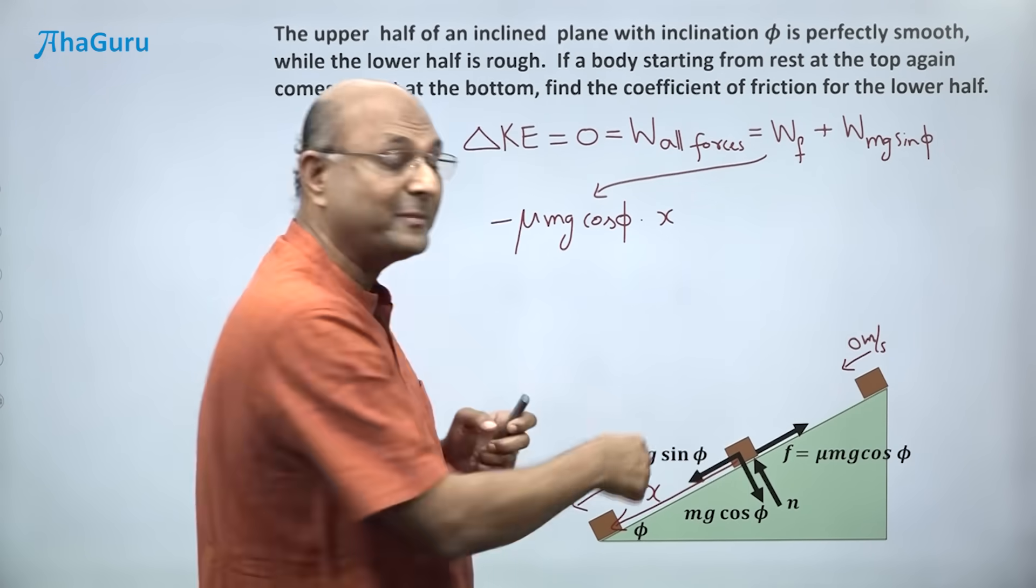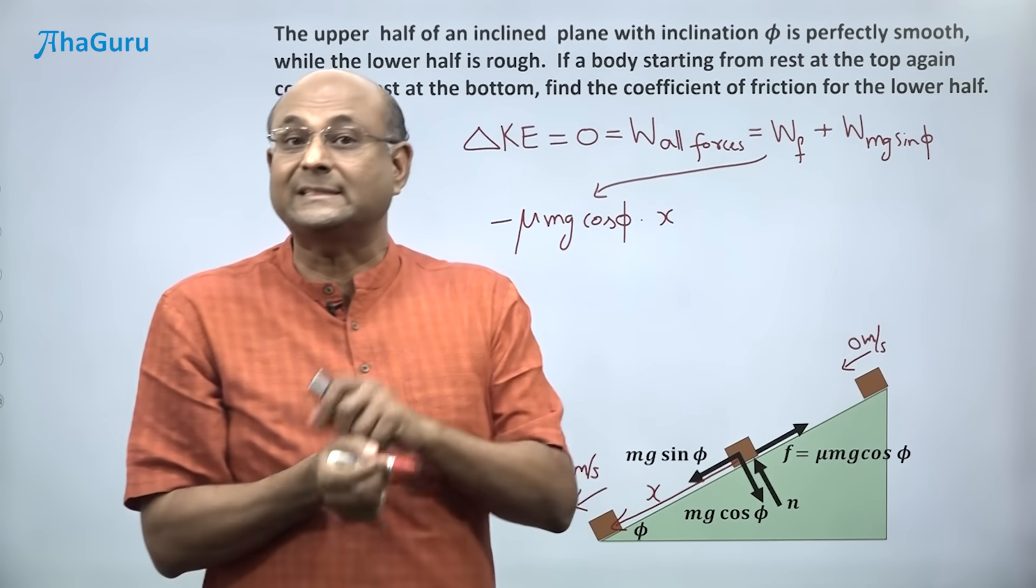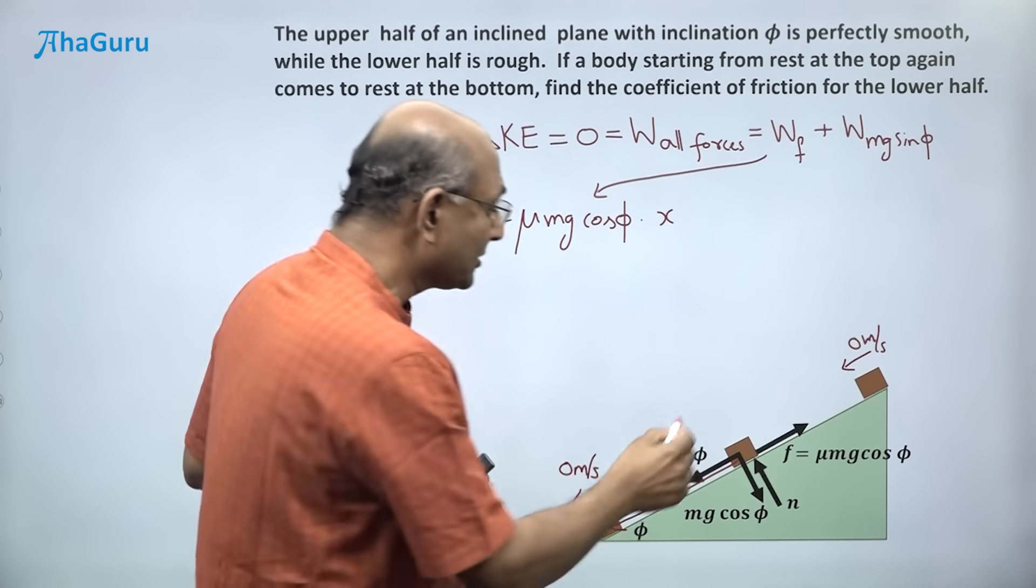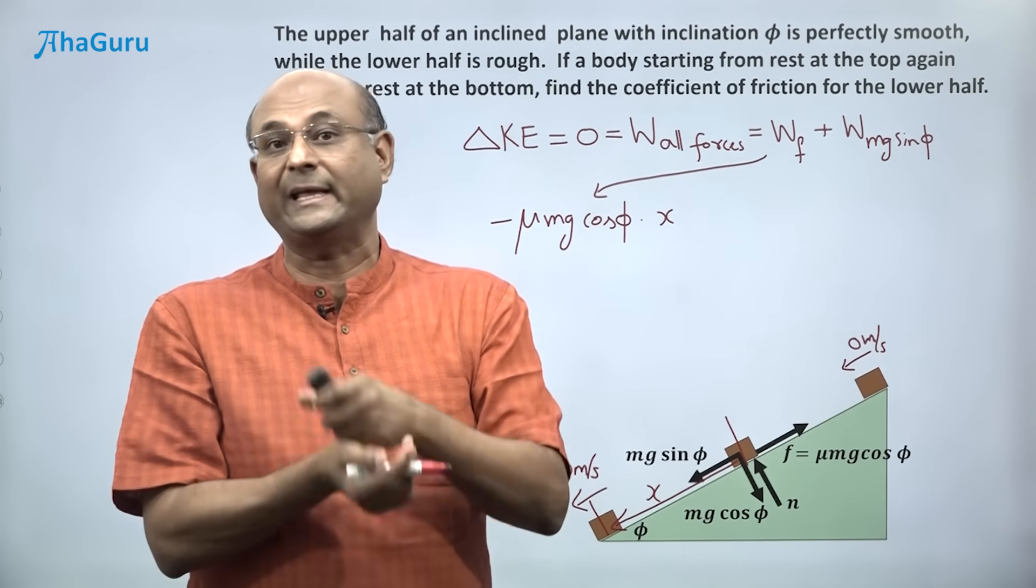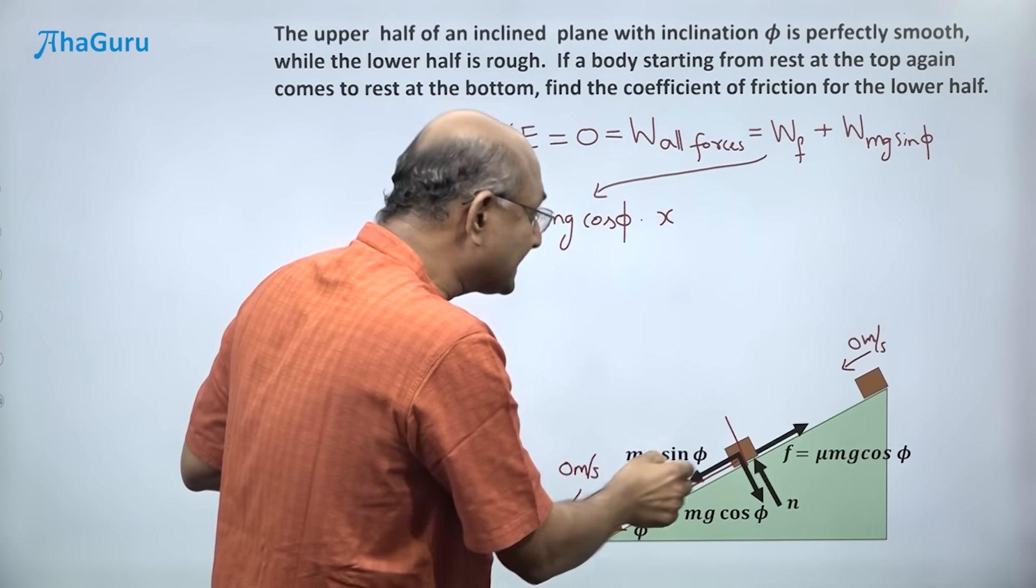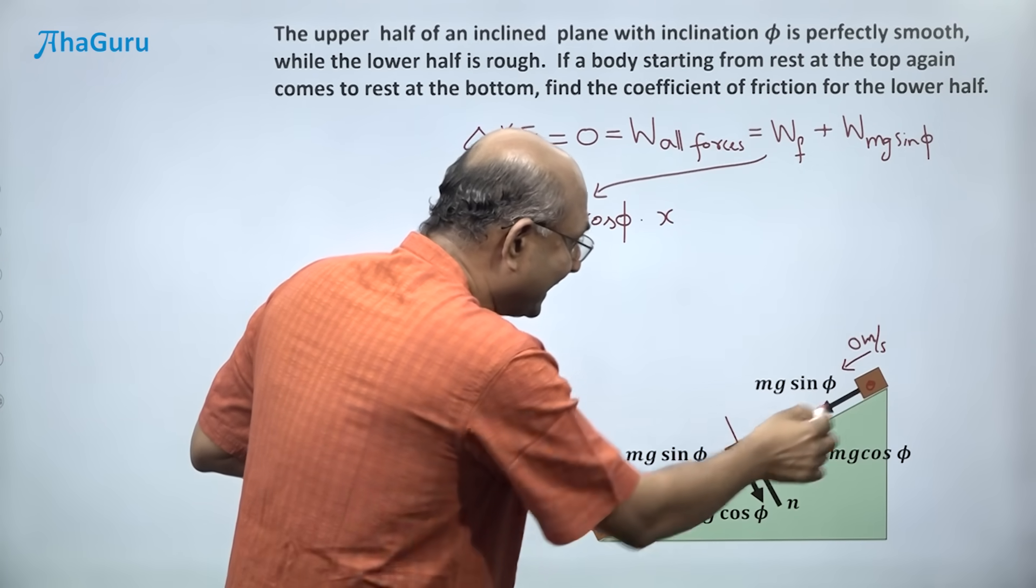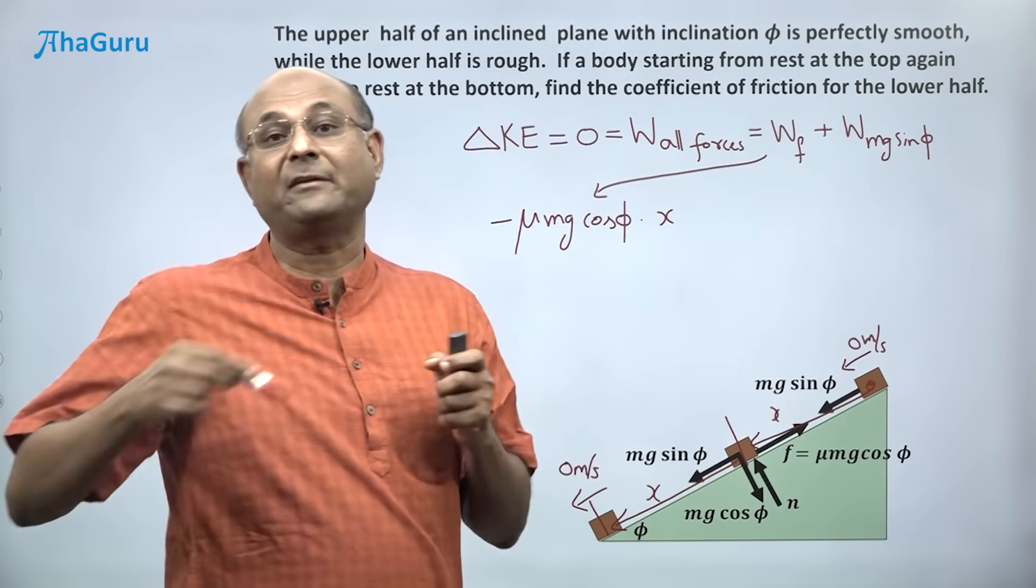What do you think about the work done by mg sin phi? Well, you can say mg sin phi into x, but that will not be correct because friction acts from this point to this point only, for half of the incline, whereas mg sin phi starts acting there, so it's going to go from here all the way there. This is x plus x. So that means mg sin phi acts over a displacement of 2x.